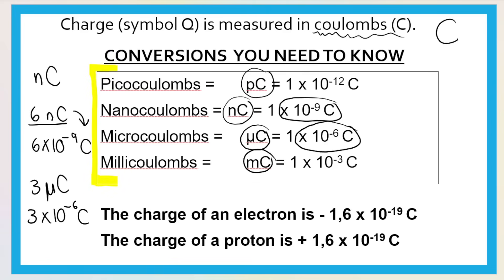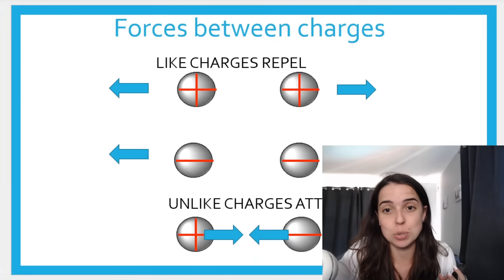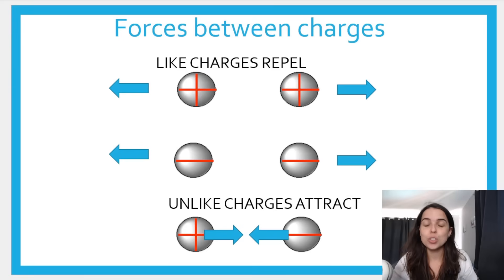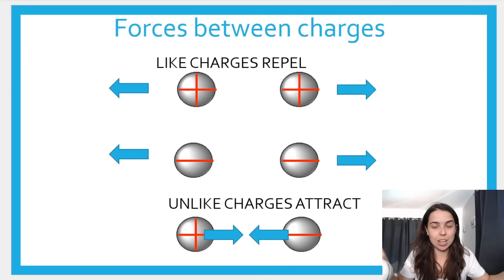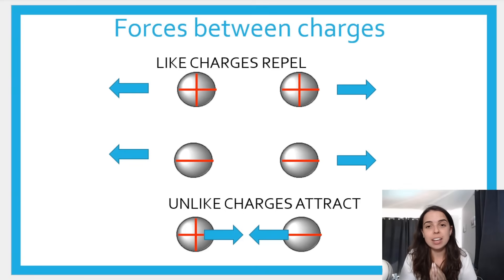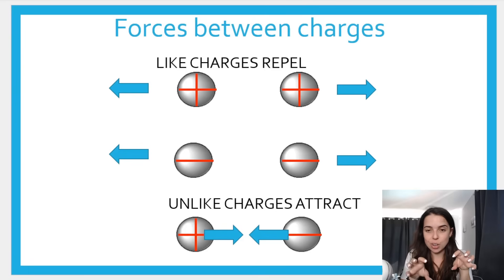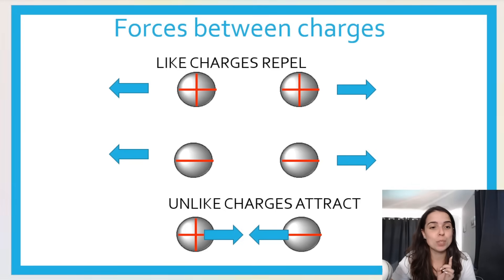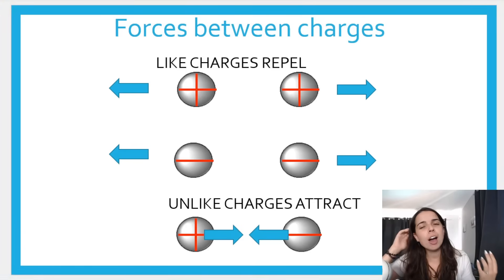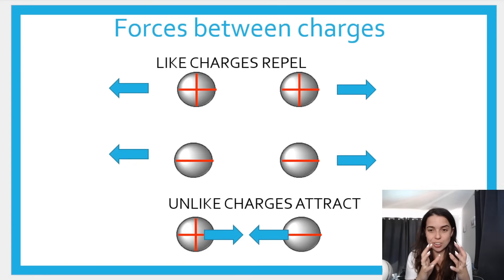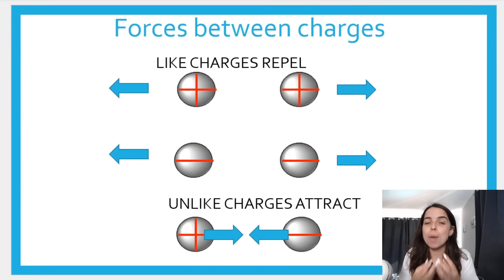Before we do Coulomb's Law, you need to understand the forces that exist between charges. If you have like charges — positive-positive or negative-negative — they repulse. They move away from each other; it's an electrostatic force of repulsion. However, if they are opposite charges — a positive and a negative, unlike charges — they will attract. That is super important to understand in the context of Coulomb's Law. The closer the charges are together, the stronger the force of attraction or repulsion; the further apart, the weaker the force.